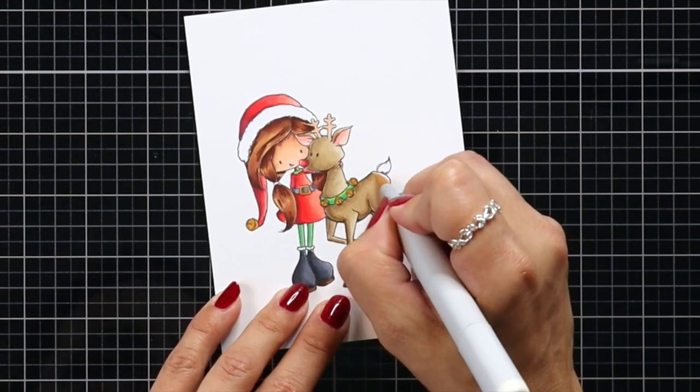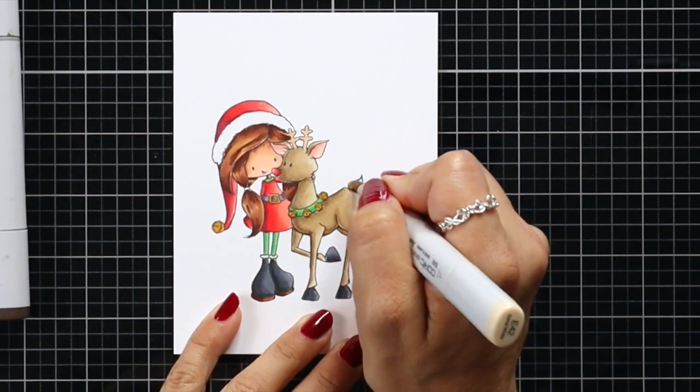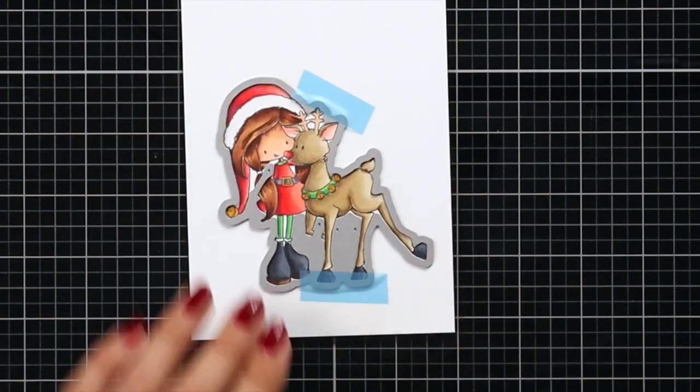After I have everything all blended out, I'm going to take the coordinating die and line that up over this image. I'll hold it in place with low-tack tape and then run this through my die cut machine.